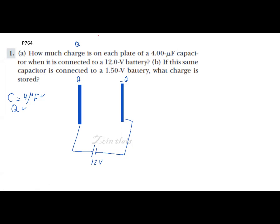...between q and delta v. You have C equals to q divided by delta v. I want to find q, so q equals to C times delta v.